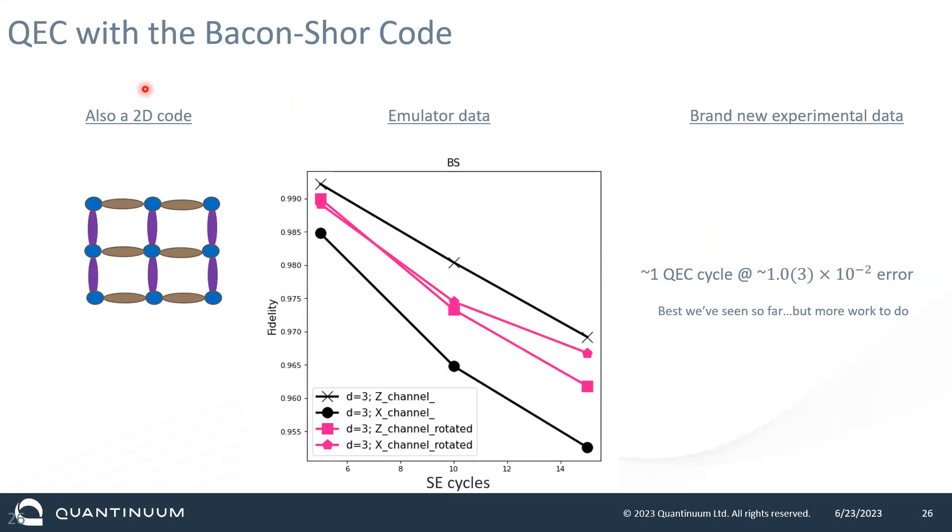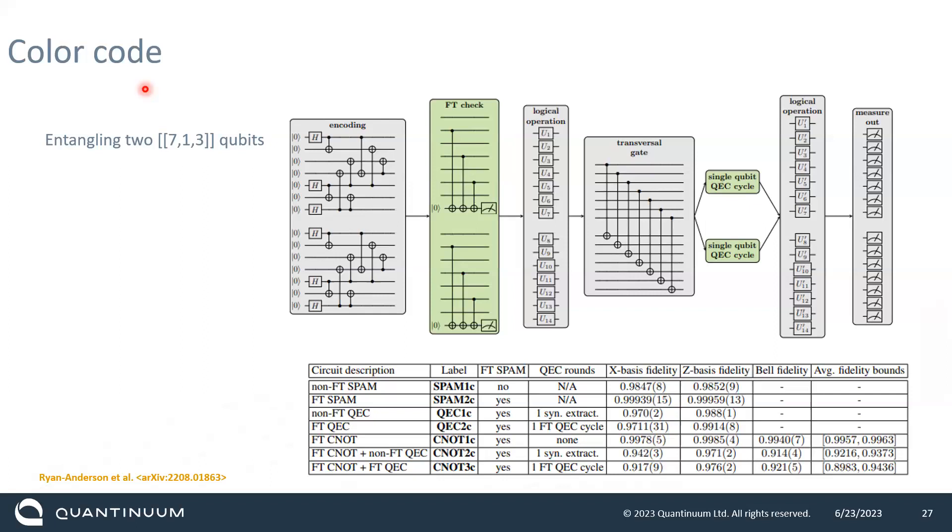Bacon-Shor code. It's also a 2D code. These are supposed to represent the gauge operators that you measure in this. They're just two body operators. I was just going to show some emulator data, but this data came from the machine just the other day. It's not a comprehensive data set by any means, but we are seeing that this Bacon-Shor code actually is performing fairly nicely. It's actually better than the color code and the surface code at this point.